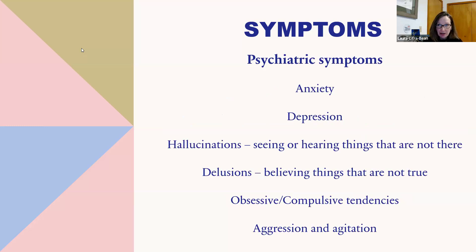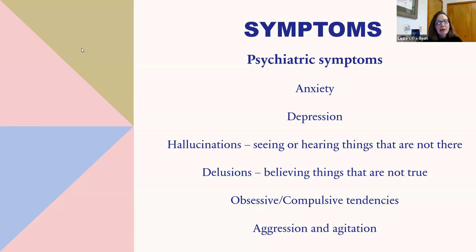Psychiatric symptoms can be a large part of this — anxiety and depression, though not all causes of anxiety and depression are considered DSRD. There can be hallucinations — seeing things or hearing things that are not there — and delusions, like believing things that are not true, such as thinking family members are not their family members anymore. There can be disordered thinking and obsessive-compulsive tendencies that increase or become very dysfunctional, and there can be aggression and agitation.